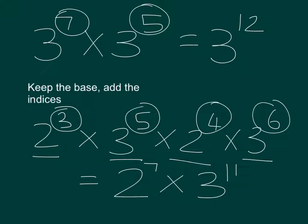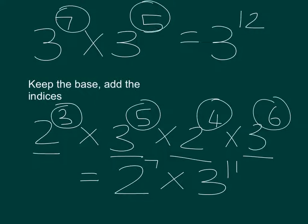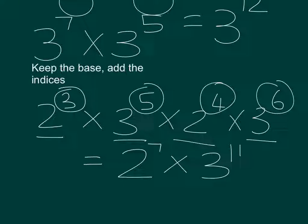If they say to you that they want you to simplify it, this is what you've done, you've simplified it. If they say to you they want you to evaluate it, it means they want you to give me the answer, so then you're actually going to use your calculator and you're going to say 2 to the power of 7 times by 3 to the power of 11 and you'll get a final answer. So simplify means just make this whole line shorter, evaluate means give me the answer.